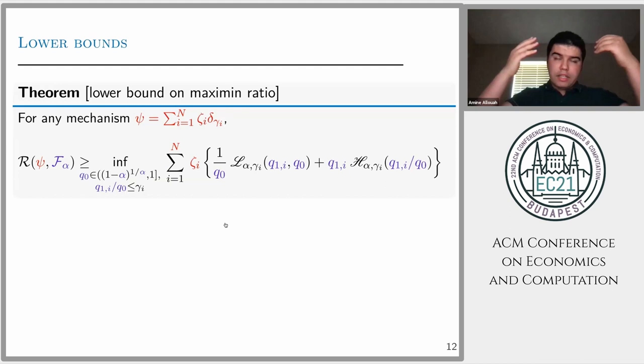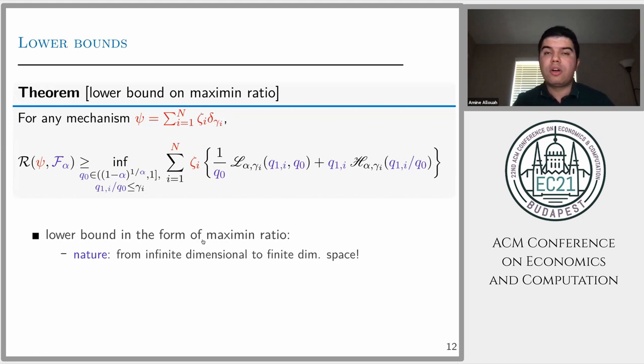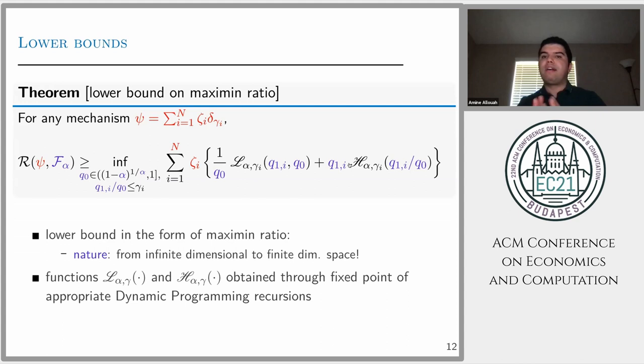I would not go through the notation here, but at a high level we move from an infinite dimensional problem to a tractable lower bound that depends fairly on just a finite number of parameters. We have reduced the complexity of the problem. Moreover, these functions are derived through a dynamic program recursion or value iteration to be more specific. This is the theoretical result. The main point is that we simplify the problem.